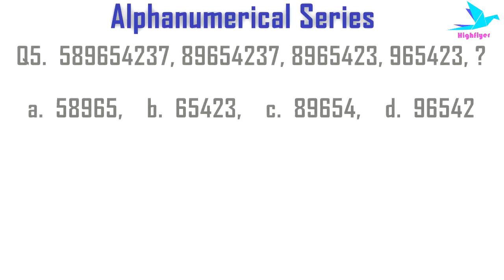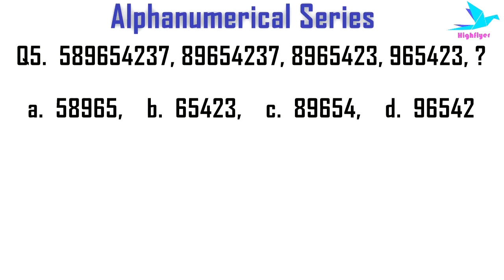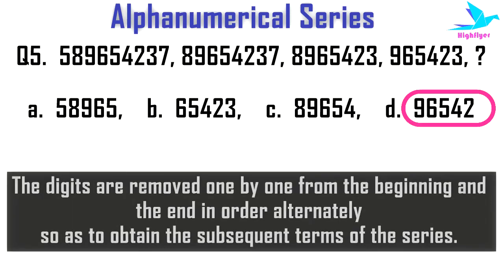Next example: find the next number in the sequence — 5 8 9 6 5 4 2 3 7, then 8 9 6 5 4 2 3 7, then 8 9 6 5 4 2 3, then 9 6 5 4 2 3, then 9 6 5 4 2. The right option is D: 9 6 5 4 2. In this given sequence, the digits are removed one by one from the beginning and the end alternately, so as to obtain the subsequent terms of the series.